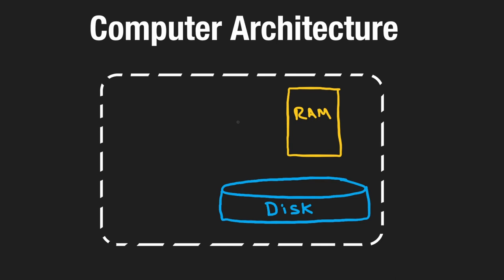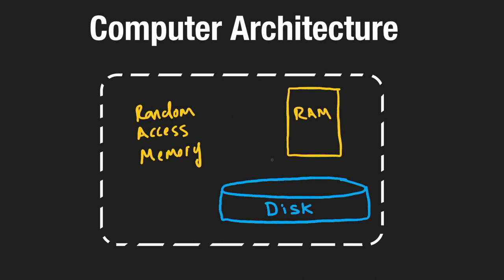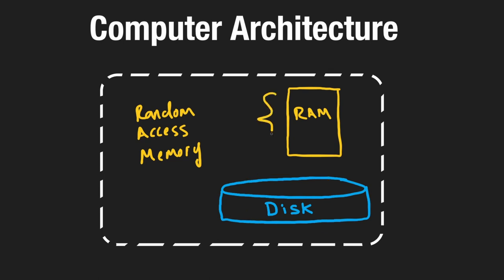We also have memory, also known as RAM — Random Access Memory. It's also used for storing information, though it's typically a lot smaller than disk. Our RAM might contain 2, 4, 8, 16, or even 32 gigabytes, generally much less than disk storage. RAM is typically more expensive in terms of money.